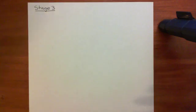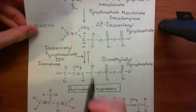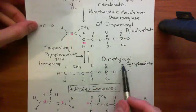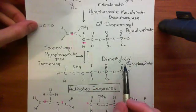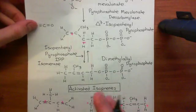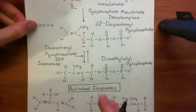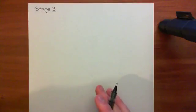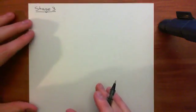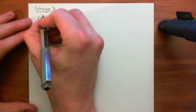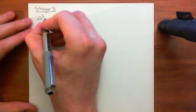To start with, it's going to be helpful to go from drawing the molecular formulas of delta-3-isopentenyl pyrophosphate and dimethyl-allyl pyrophosphate to drawing their skeletal formulae, because otherwise it gets just unbearably complicated if we continue with the molecular formulae. So let's draw our skeletal formulae for both of these molecules.